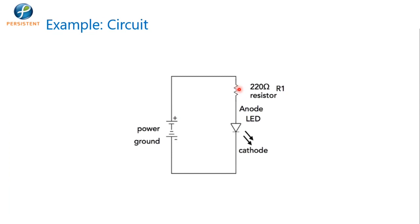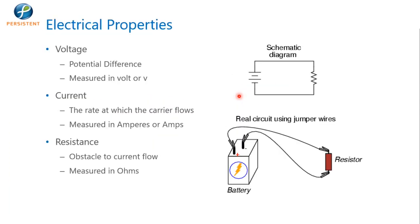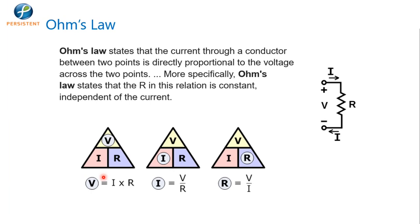A simple circuit example: an LED and resistor connected in series with a voltage source — the current flowing through the LED is limited or controlled through the resistor. With the electronic basics: voltage is the potential difference between two points, measured in volts. Current is the rate at which charge carriers flow, measured in amperes. Resistance is the obstacle to current flow, measured in ohms. Ohm's Law states that current through a conductor is directly proportional to the voltage across two points — V = IR, where R is constant independent of current.